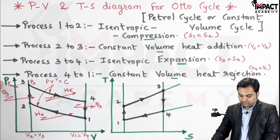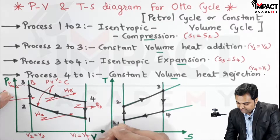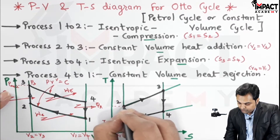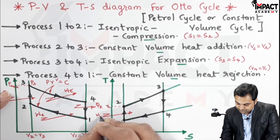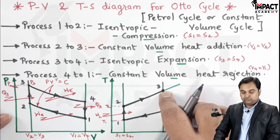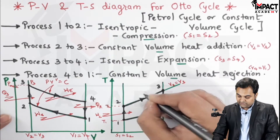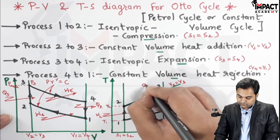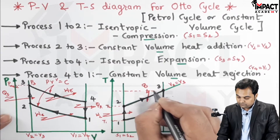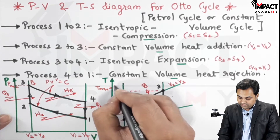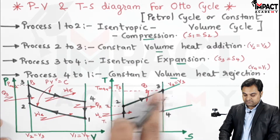Process 1 to 2 shows isentropic compression where entropy remains constant, S1 equals S2, and temperature increases from T1 to T2 — work is supplied to the system during compression. During process 2 to 3, heat is added at constant volume, so points 2 and 3 are on the same constant volume line with V2 equal to V3, giving maximum temperature at point 3: T_max equals T3. At point 3 we get both maximum temperature and maximum pressure.